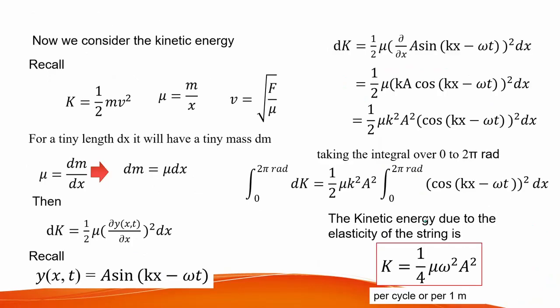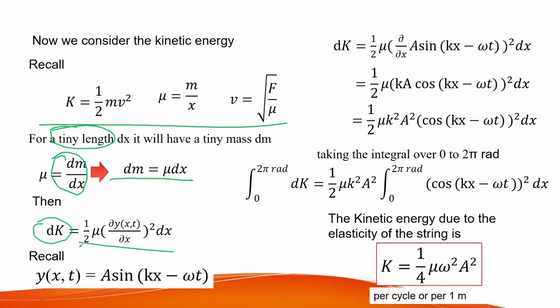To determine the kinetic energy of the 1-meter string, we recall the expressions for kinetic energy, linear density, and wave speed. For a tiny segment, linear density equals dm over dx, so dm equals linear density times dx. Substituting into the kinetic energy function and applying the same mathematical process, we find that kinetic energy also equals one-quarter times linear density, times angular frequency squared, times amplitude squared — the kinetic energy per cycle or per 1 meter.